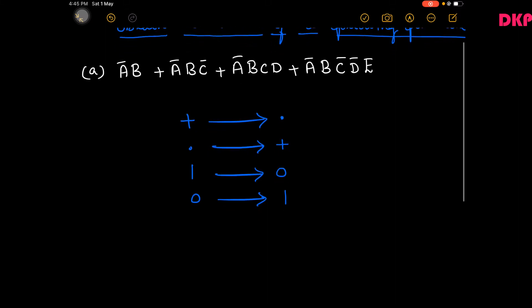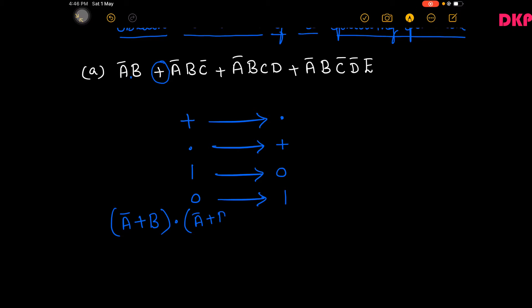But we are not supposed to complement the variables; the variables should be written as they are. For this example, the first variable ā is written as it is. When there is nothing written between two variables it is called AND, so AND is converted to OR. The OR symbol is then converted to AND. Working through the full expression: ā·b + ā·b·c̄ + ā·b·c·d + ā·b·c̄·d̄·e becomes (ā+b)·(ā+b+c̄)·(ā+b+c+d)·(ā+b+c̄+d̄+e).